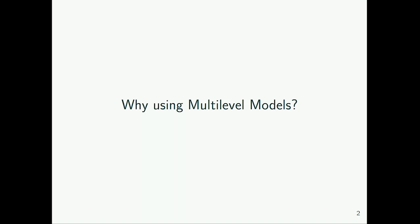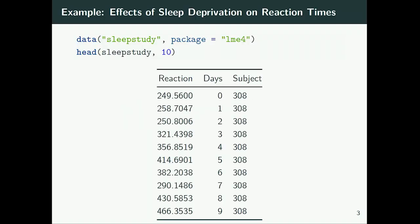Another example of multilevel data is repeated measurements. When you measure the same subject multiple times — for instance, ten times — those observations of the same person tend to be dependent because they are from the same person, and we have to account for that. A simple example of repeated measurement data comes from the LME4 package, called the sleep study, which investigates the relation between reaction time in milliseconds and days of sleep deprivation.